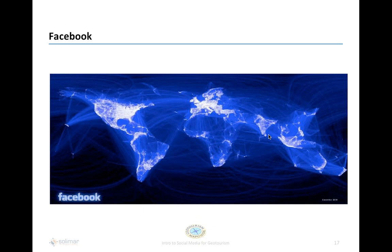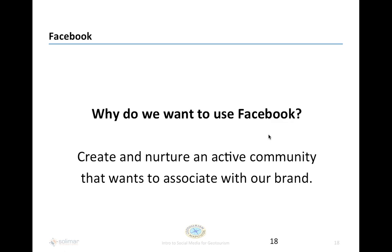Facebook is a truly global network. You can see how people are linked from all over the world through their messages and friends. The U.S. Gulf Coast states geotourism map guide was designed to be a global marketing tool, and we are trying to reach a global audience on Facebook — there's no reason why you can't do the same. We want to be able to create and nurture an active community that wants to associate with our brand, and help our geotourism place be part of someone else's story so they share it with their friends.